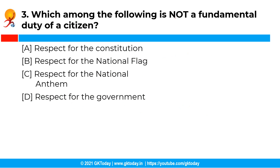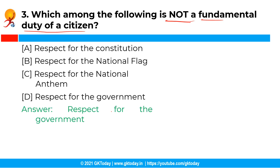The next question is: which among the following is not a fundamental duty of a citizen? The correct answer is option D — respect for the government. Respect for the government of the day is not a fundamental duty as such, whereas respect for the constitution, respect for the national flag, and respect for the national anthem are the fundamental duties of a citizen.